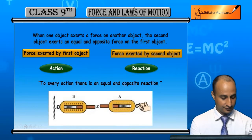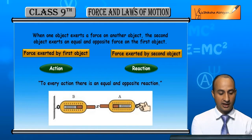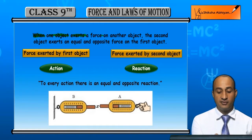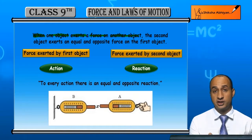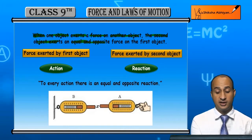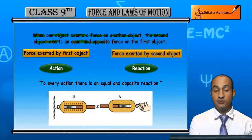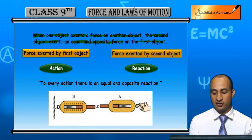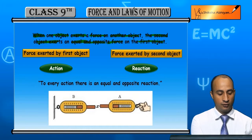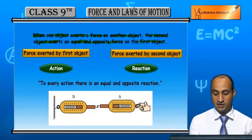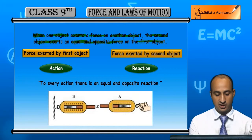Exactly: when one object exerts force on another object, then the second object exerts an equal and opposite force on the first object. So the force exerted on the first object is equal to the force exerted by the second object.